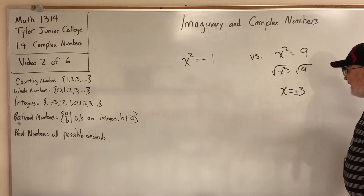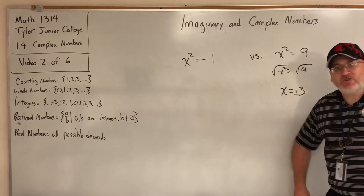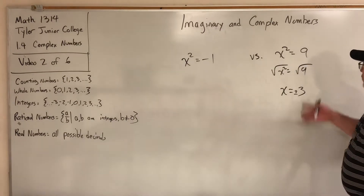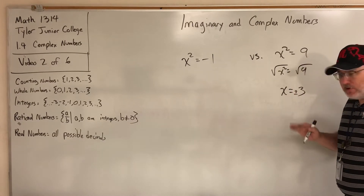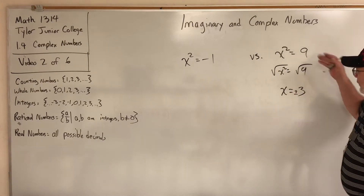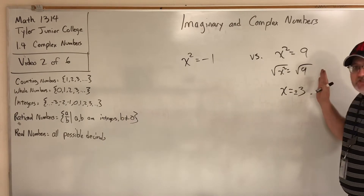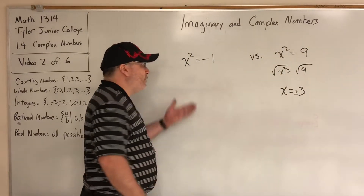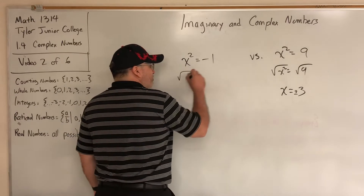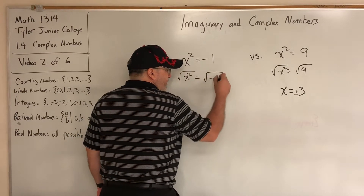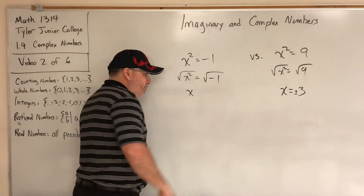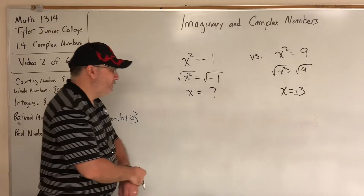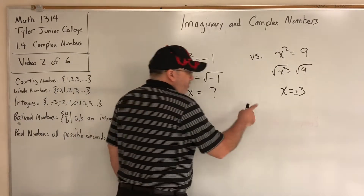When we learn about solving quadratic equations in section 1.5 we'll cover when and how to use this technique properly. For now, let's assume we can square root both sides of an equation to get both solutions, three and negative three. What if we apply that to x squared equals negative one — squaring both sides to cancel the square and solve for x?